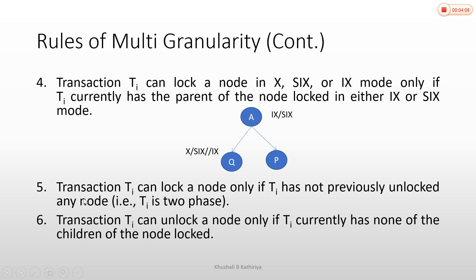The fifth rule: transaction TI can lock a node only if TI has not previously unlocked any node. Once we start to unlock, similar to the growing phase and shrinking phase in 2PL, you will start to unlock. So if you have 2PL, once you start to unlock, you cannot acquire new locks.